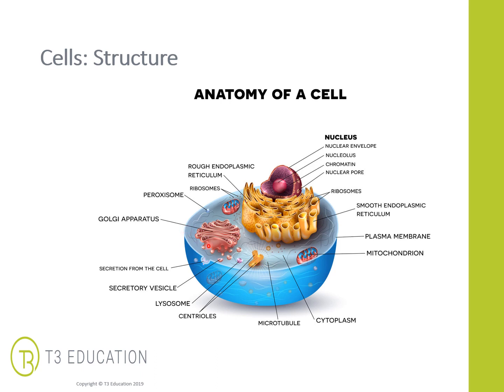Next up is the Golgi apparatus, which modifies, sorts and packages the proteins for secretion. I always think of this one like the post office — getting all the sorting ready before things exit and enter. Mitochondria is a really important one. It is responsible for energy within the cell: energy conversion and the production of ATP. We'll talk about this a lot when we discuss how energy is created, for example in muscles for movement.